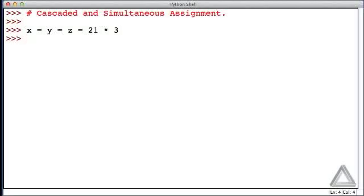You might see something like this in math class, and what we get here is that x, y, and z are assigned the value that resulted from that expression on the extreme right. So that should be 63, and let's check on that x, y, and z.